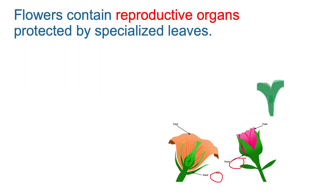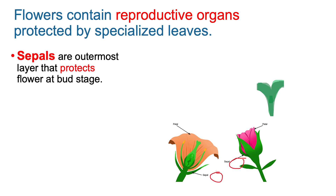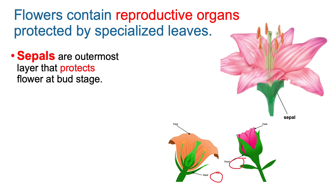Flowers mainly contain the reproductive organs and they are protected by specialized leaves called the sepals. The sepals are the outermost layer that protects the flower at the bud stage. When the flower starts to grow out of the plant, it first exists as a bud — small, very small — totally covered up with green-colored leaf-like structures which are called the sepals.